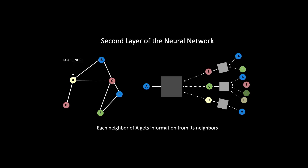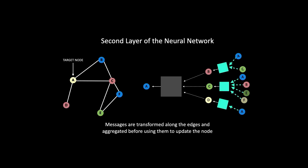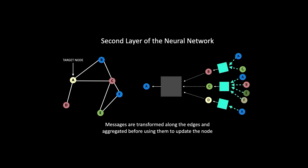For every target node, the second layer of the neural network aggregates information from nodes that are two hops away from the target node. These messages passed from neighboring nodes are transformed along the edges and aggregated before they're used to update the target node. The computation graph you see on the right is the computation graph for node A. This computation graph defines the architecture or structure of the neural network, and it is going to be different for each node in your input graph. Each node will have its own computation graph and its own neural network architecture during training. This process of getting and aggregating information from neighboring nodes is referred to as message passing.